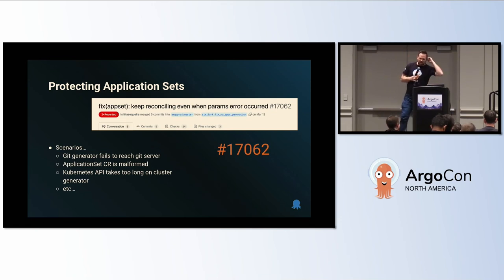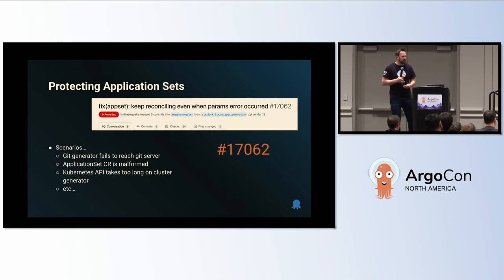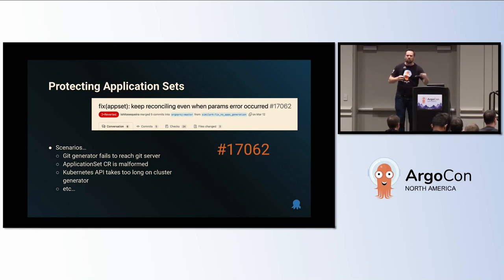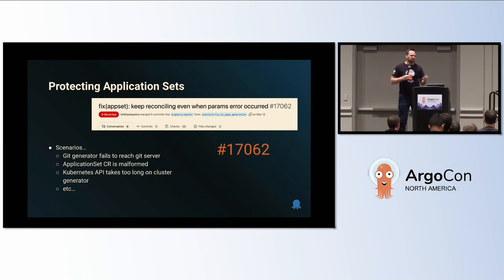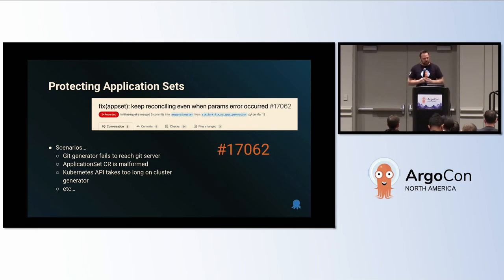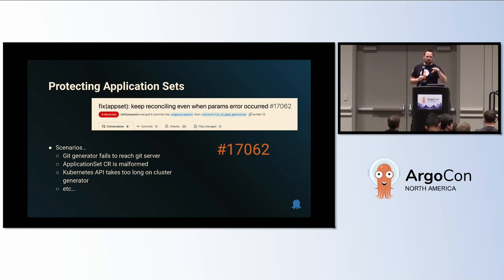This patch was reverted back in late March. This was a situation where well-meaning thinking — wanting more resiliency and not blocking changes — actually led to resources getting deleted in an unexpected way. This could happen for any reason a generator fails: a Git generator failing to reach the server, a malformed application set, or the Kubernetes API taking too long to respond to the cluster generator.